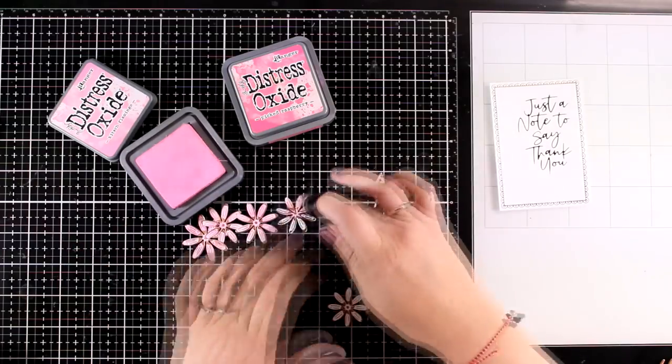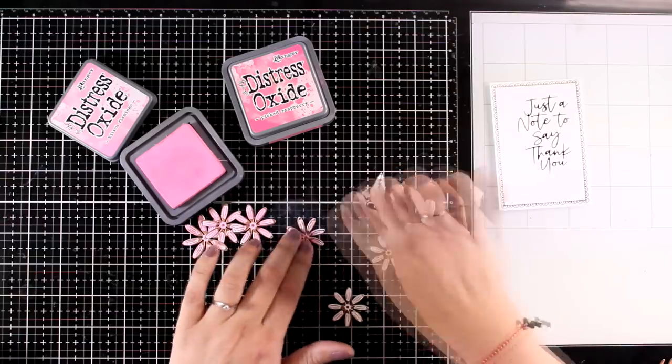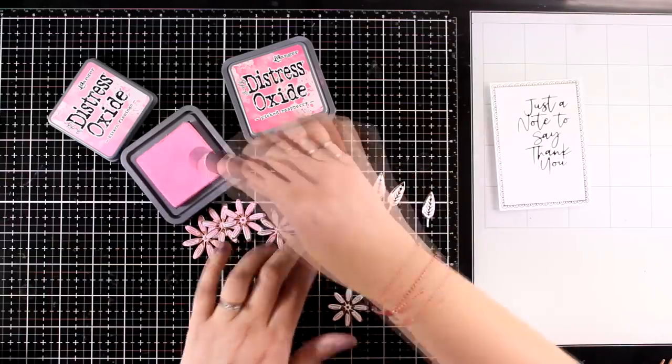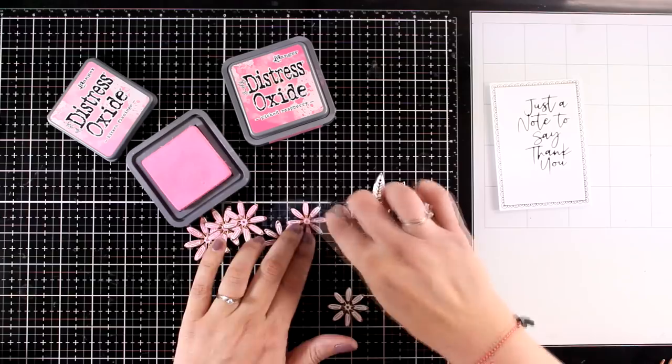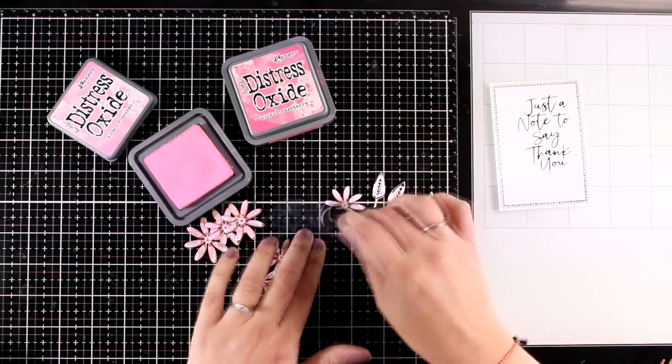I'm using a finger dabber to apply the ink but any blending tool would work for that. And you can go and cut out these flowers and foil them from pattern paper if you like or even from colored cardstock. I decided to ink them up myself.